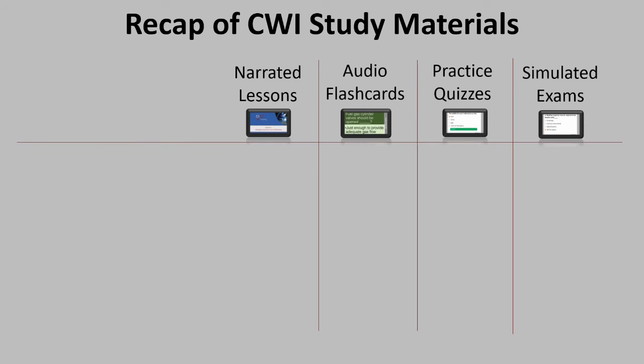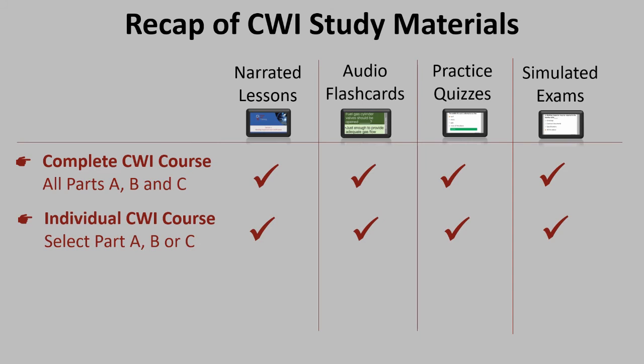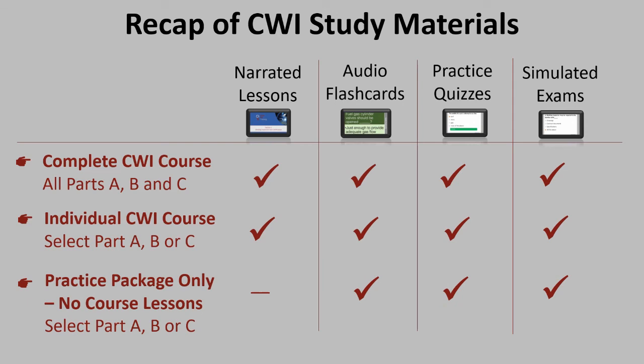You have two options if you want the narrated lessons and everything else. You can purchase the complete CWI course package, which includes all parts A, B, and C, or you can just do the individual course package and select whether you want A, B, or C. If you just want the flashcards, quizzes, and exams and aren't interested in the narrated lessons, you can purchase the practice package only and select which parts you want — A, B, or C, or all three.